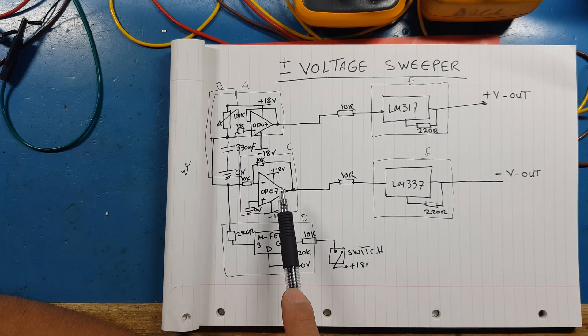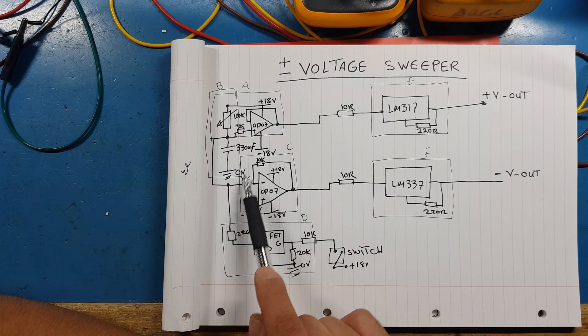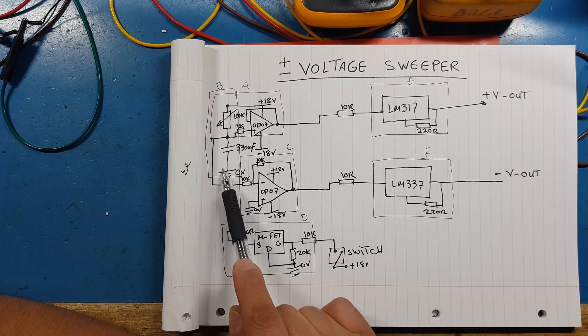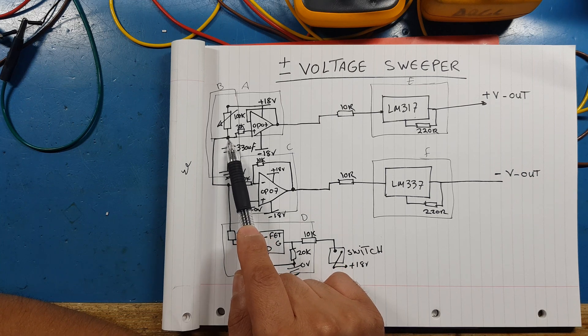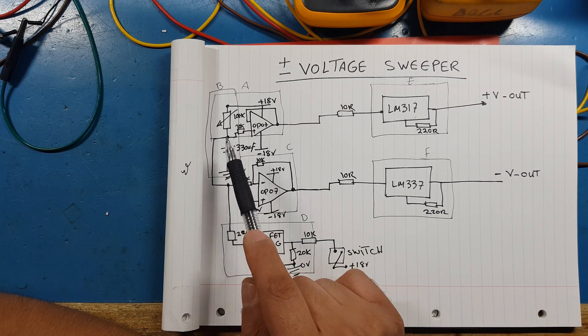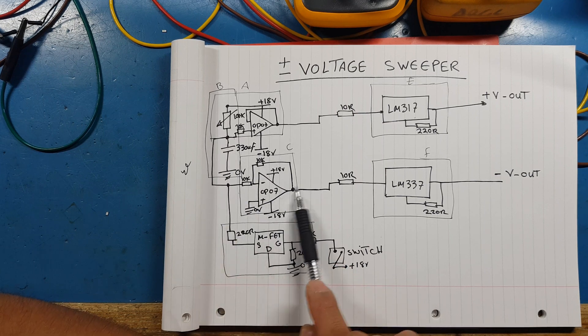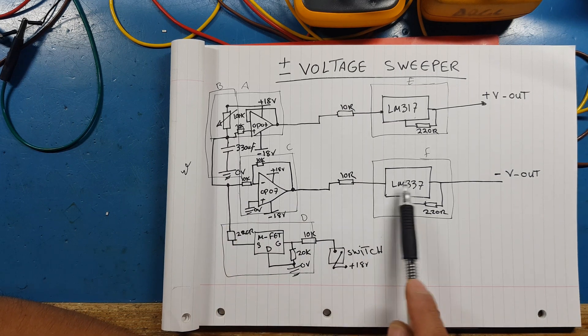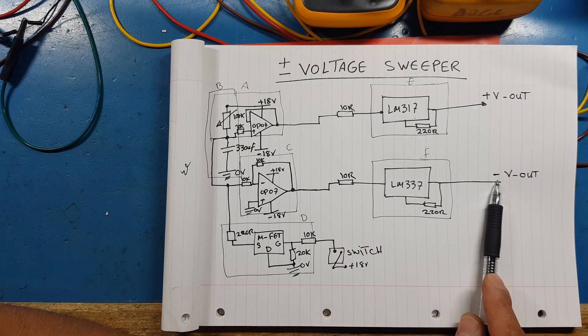And then what we're going to do over here, we're going to get that voltage again from the capacitor charging but we're going to invert it. So we're going to go into an amplifier inversion but we're not going to put any gain, so we're going to have just a gain of 1. The voltage is inverted. So here where we get the positive rail, this is going to invert it and generate a negative for us so we can feed it into our LM337 to get our negative voltage out.